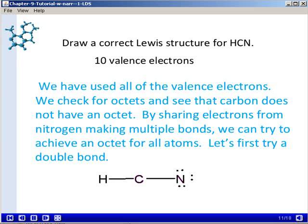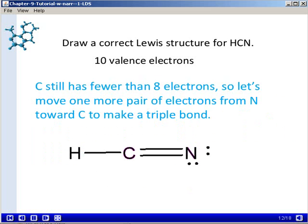We'll move a lone pair of electrons from nitrogen into a bonding pair to make a double bond. But when we do that, we see that carbon still has fewer than 8 electrons. It only has 6 electrons associated with it now. So let's move one more pair of electrons from nitrogen to carbon to make a triple bond.